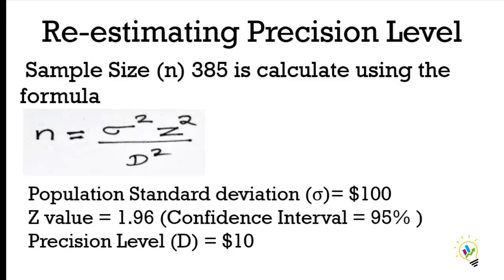Now we will discuss the second condition: re-estimating the precision level. The sample size was calculated as 385 using the formula n = sigma squared times z squared divided by d squared, where population standard deviation is 100 dollars, confidence interval is 95 percent with z = 1.96, and precision level is 10 dollars.